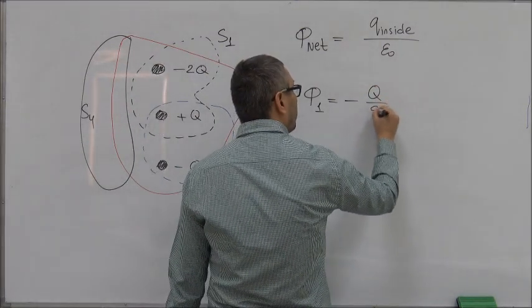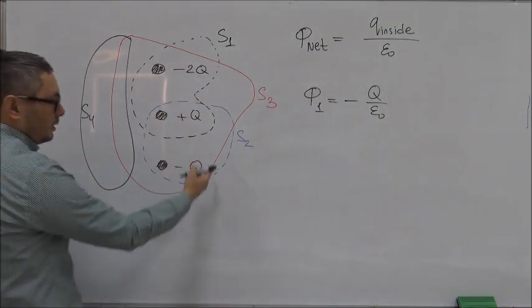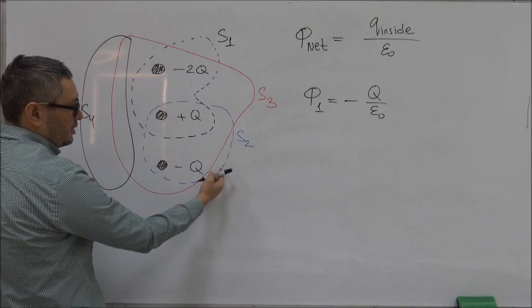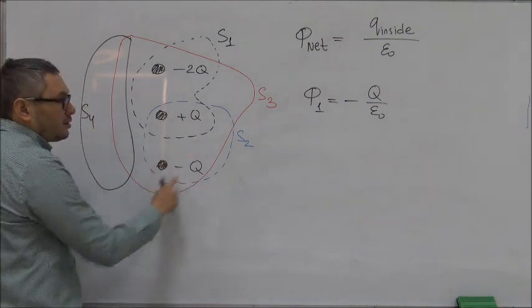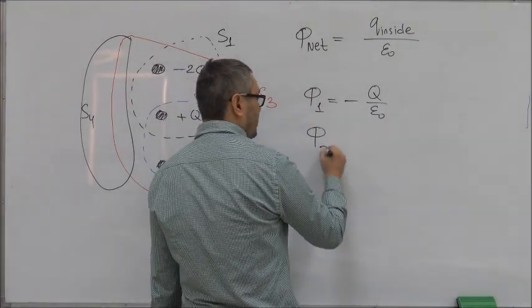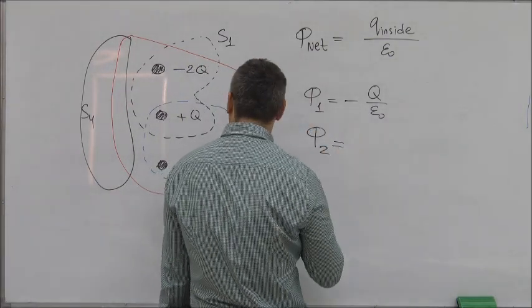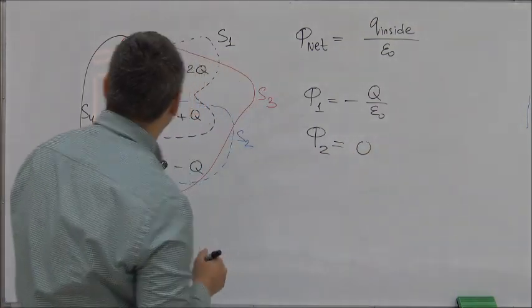Now let's look at S2. Within S2, which is this dashed blue line, we have +q and -q, so the total charge is zero. Therefore, the net flux through the second surface is zero. Now let's look at the third one.